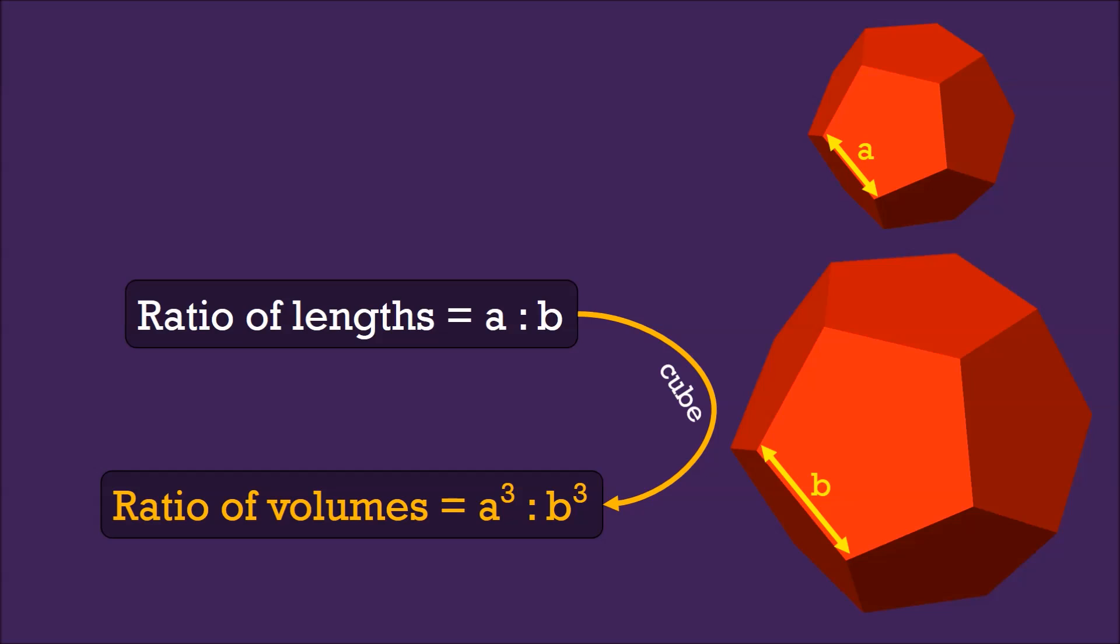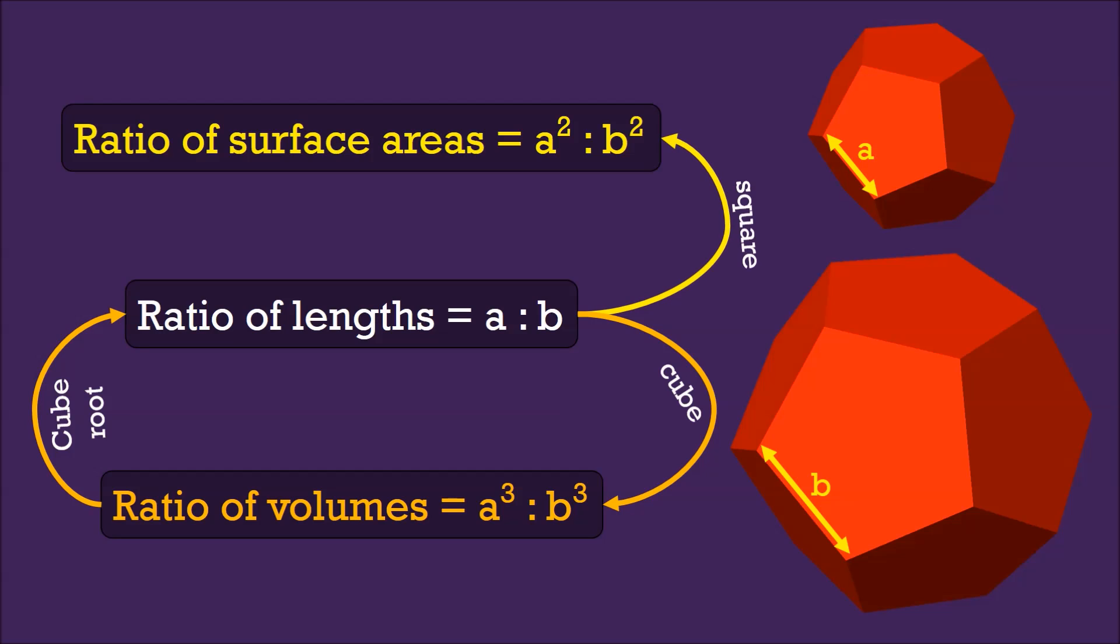If you are given the ratio of the volumes, you can always cube root it back to find the ratio of the lengths. Now, if you want to find the ratio of the surface areas, we would square this ratio to give us the ratio of the surface area a²:b².